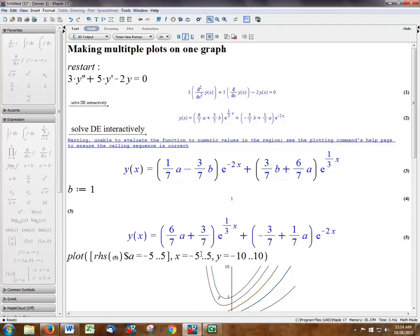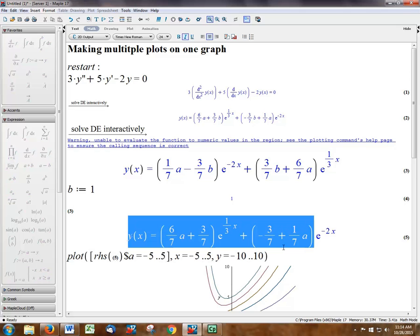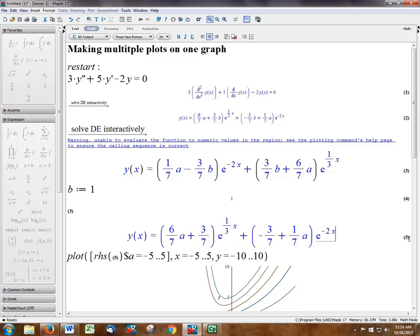So to plot this function, here's what you want to do. You want to type plot and then parentheses, square bracket, right hand side of this equation. In my case, it's equation five. I can see it right here. Equation five is right here. And then my parameter is a, so I want to do close parenthesis, dollar sign.